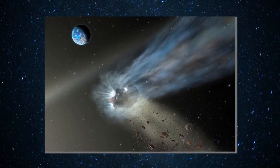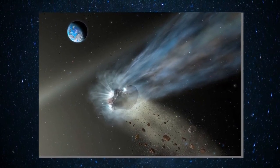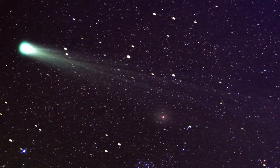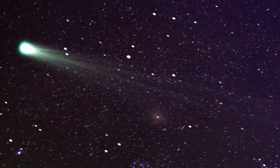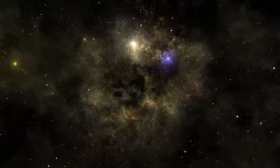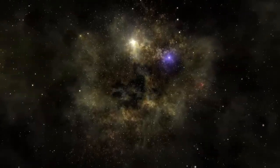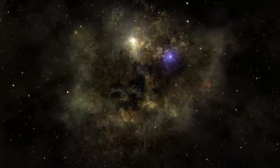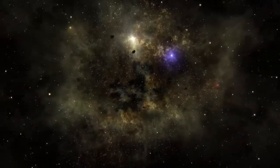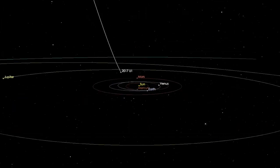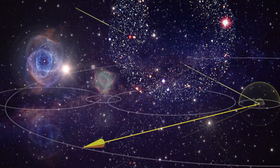'Oumuamua, with its strange rock-like appearance and erratic behavior, defied the conventional expectations of an ordinary asteroid. This celestial traveler had a story to tell, and it was far from ordinary. The more the data was processed and analyzed, the clearer it became that this mysterious interstellar object had a nature that surpassed all expectations. Its abrupt trajectory alterations left scientists astounded and ignited a flurry of intriguing questions about the true essence of 'Oumuamua.